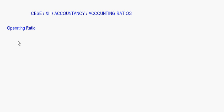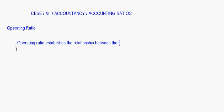Today let's take up the lesson on accounting ratios and we will do operating ratio. This operating ratio establishes the relationship between the operating cost and the net sales, and this is expressed in percentage.